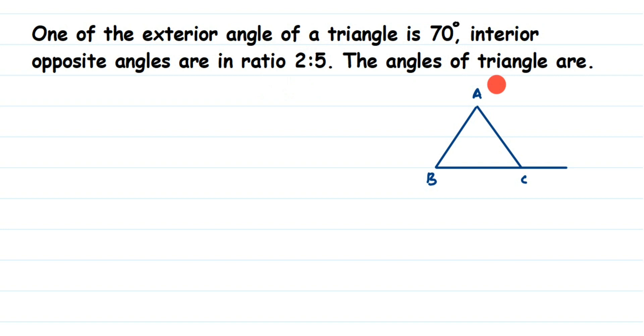So we have to find out all the angles of triangles here. They have given the ratio of the interior angle which is 2 is to 5 and they have given one exterior angle is 70 degrees. Then how to find out these angles?